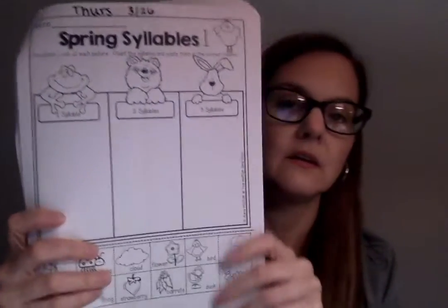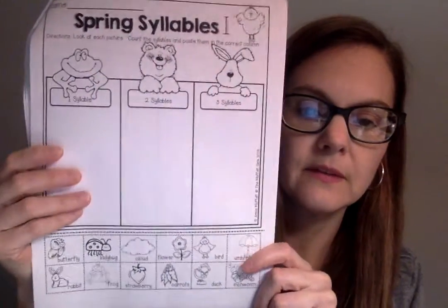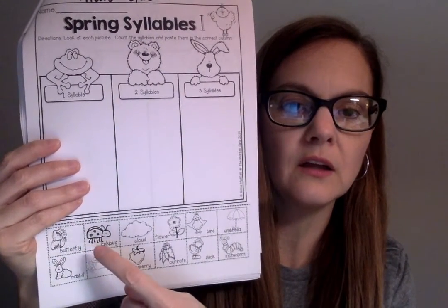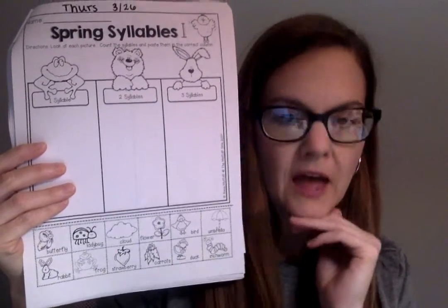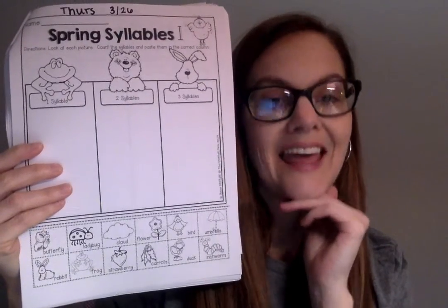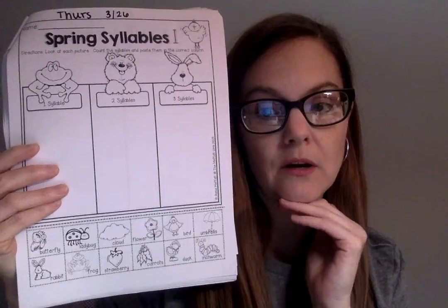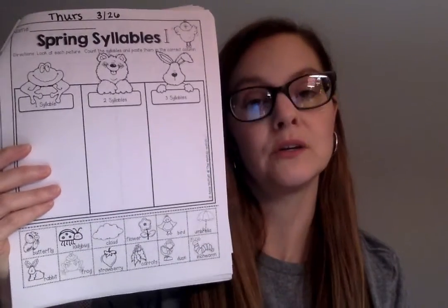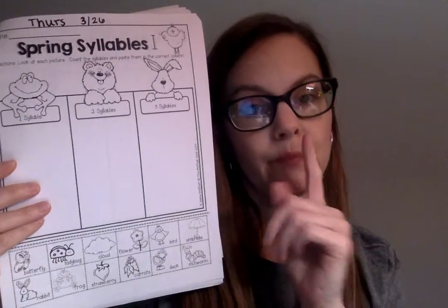Send me four sentences with four different sight words. In your packet you have a spring syllables activity — here it is, this is so cute! Remember for syllables you're not sounding out the word. Just say it and put your hand under your chin. Ladybug — how many chin drops are there?